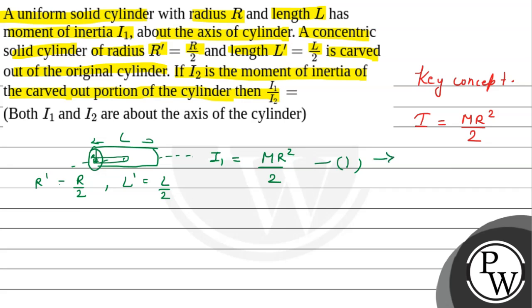So, i1 is equal to mr²/2. Now, for the carved-out cylinder, i2 is equal to m r squared divided by 4 — working toward the value of i2.